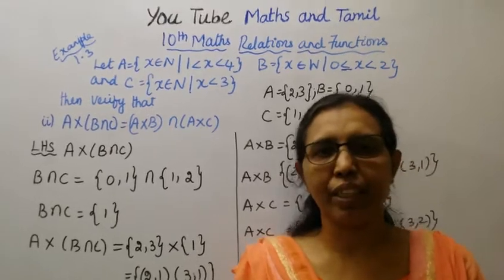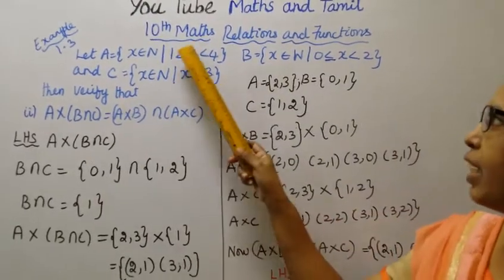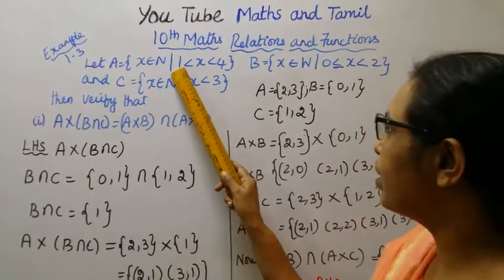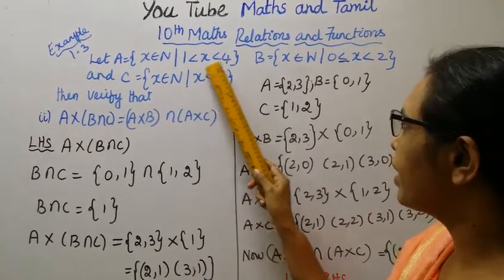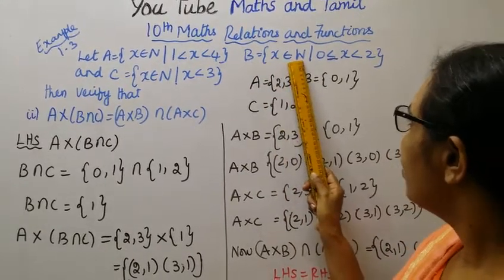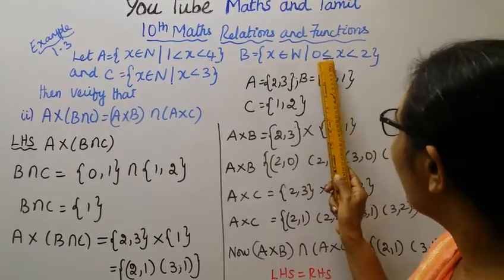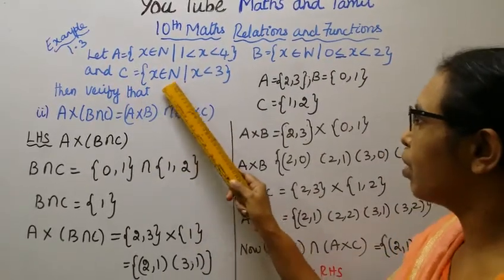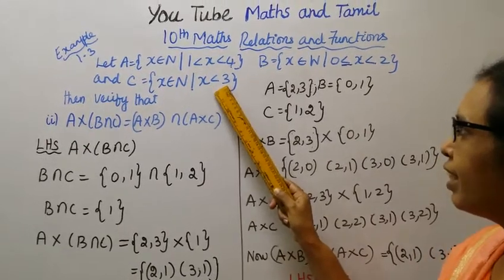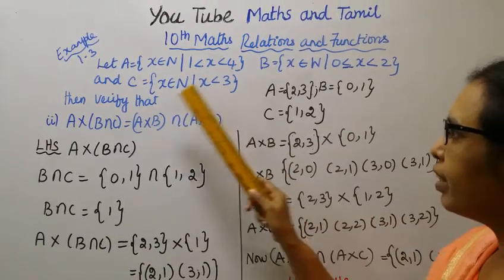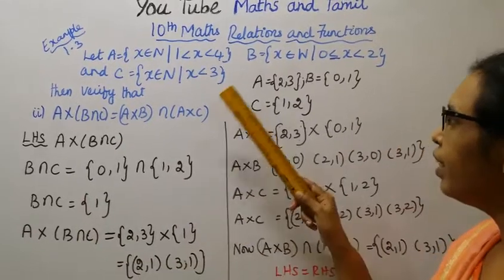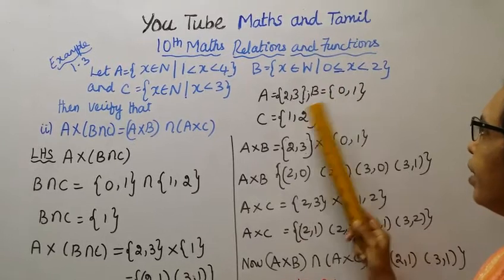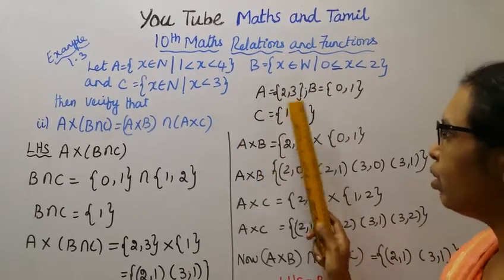Hello students, welcome to Maths and Tamil channel. 10th standard Maths, Relations and Functions, Example 1.3. Let A equal to x belongs to N such that 1 less than x less than 4, B equal to x belongs to whole number 0 less than or equal to x less than 2, and C equal to x belongs to N such that x is less than 3. So A is {2, 3}, B is {0, 1}, C is {1, 2}.